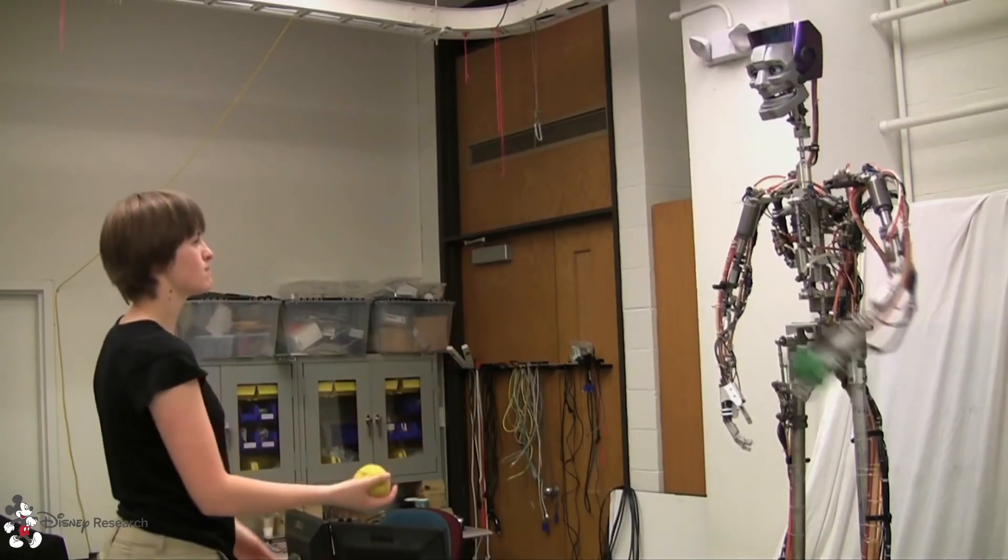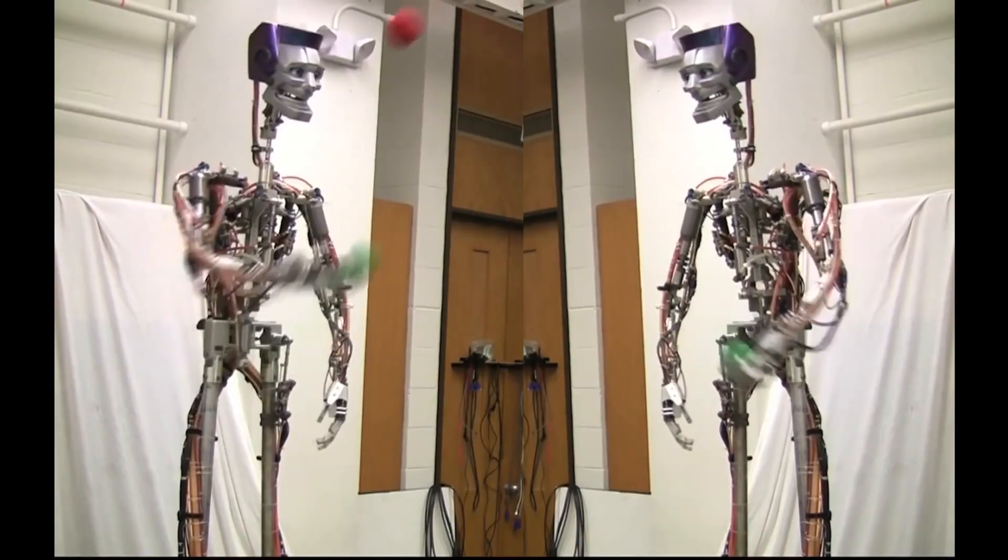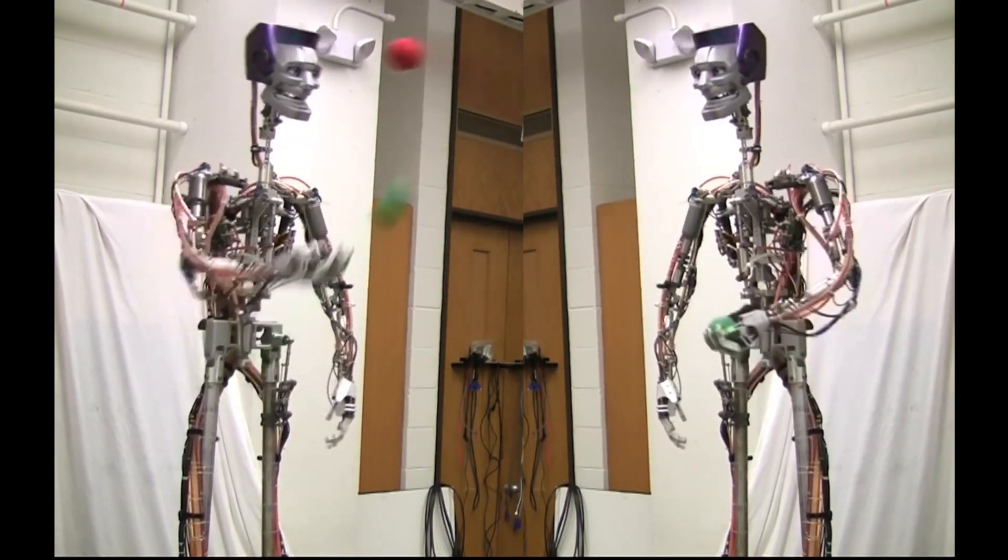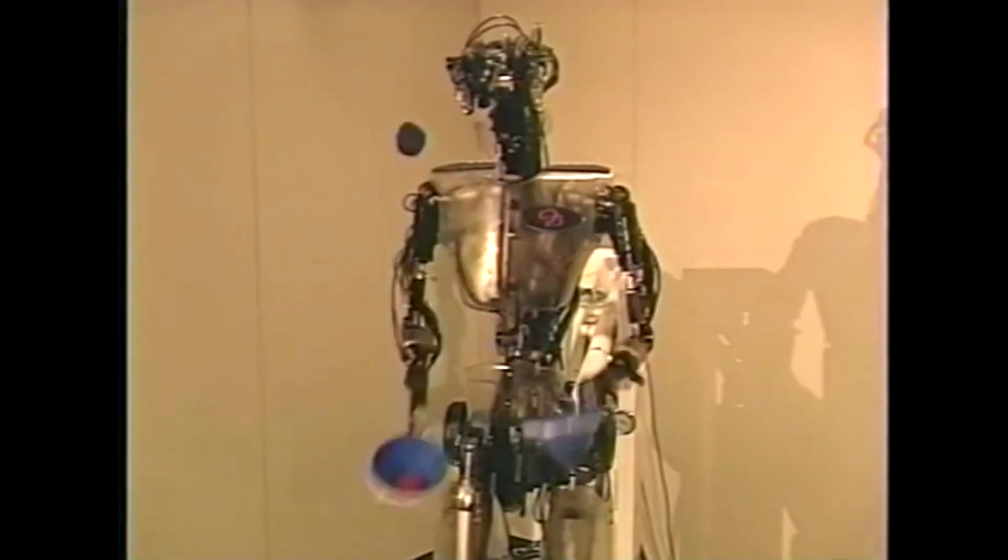The Disney Research Labs robot only does half the cascade. Two of these robots facing each other could juggle three balls, I'm sure. The Sarkos humanoid robot juggled three balls for much longer,